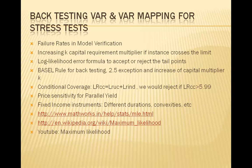The zone is quite broad — green, yellow, and red — with different penalties for 5 to 9 exceptions. The committee established four categories of causes for exceptions to guide supervisors: basic integrity of the model is lacking, model accuracy needs improvement, intraday trading activity, and bad luck.